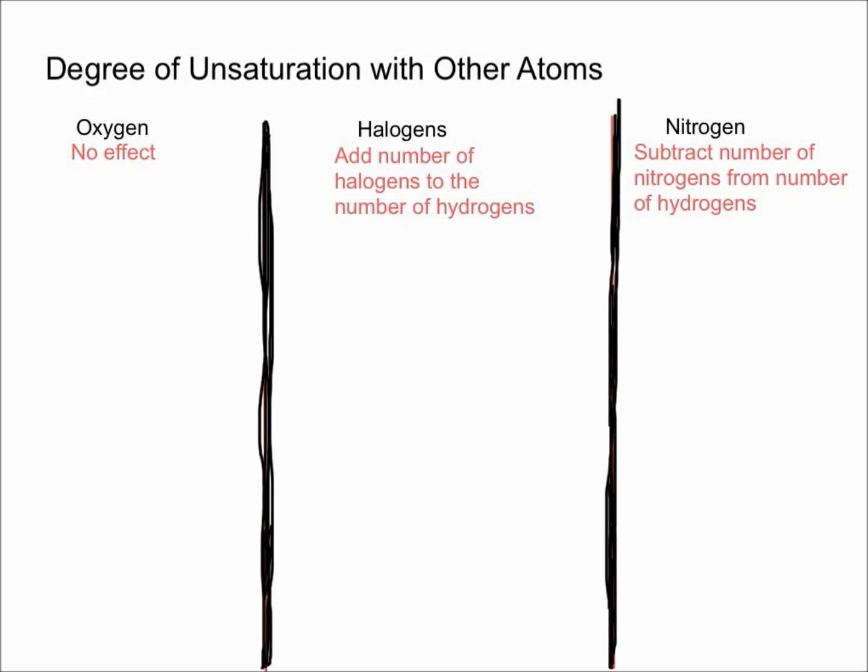In this video, I'm going to talk about degrees of unsaturation with atoms other than just carbon and hydrogen. The three main types of atoms we're going to consider are oxygen, halogens, and nitrogen, and their effects on the degree of unsaturation, also known as the index of hydrogen deficiency.